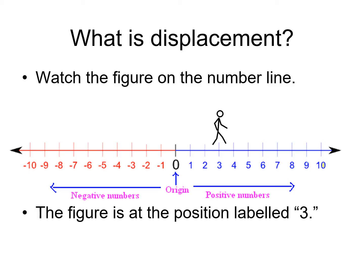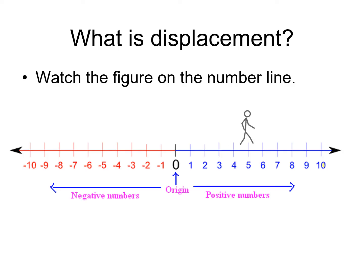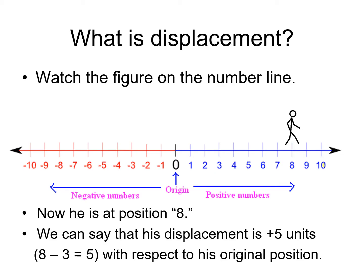Now watch the figure on the number line. It's starting out at position 3. But now it appears to be moving across the screen and it ends up at position 8. We can define the figure's displacement as plus 5 units along this number line. It ended up at 8, it started out at 3. 8 minus 3 is 5 units with respect to the original position difference. That is its displacement.